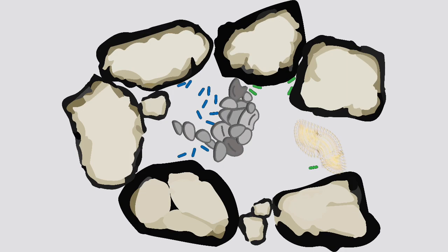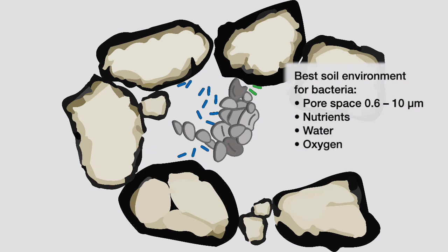Due to the grazing pressures on microbes, the ideal habitable pore space is between 0.6 and 10 micrometers. As combined with optimal nutrients, water and oxygen, this offers the best environment for bacterial survival.